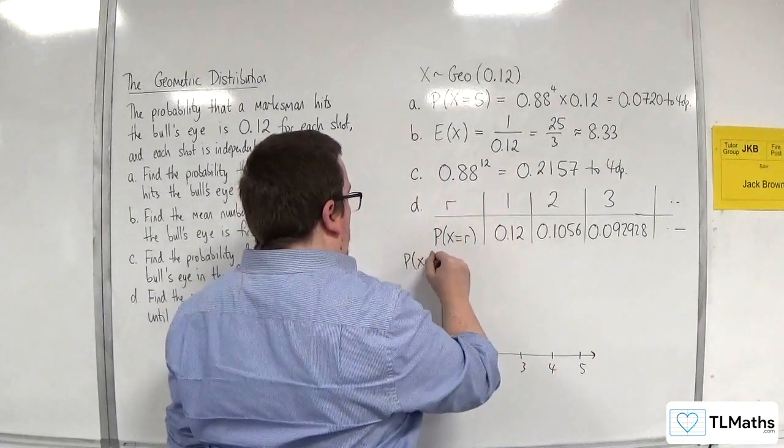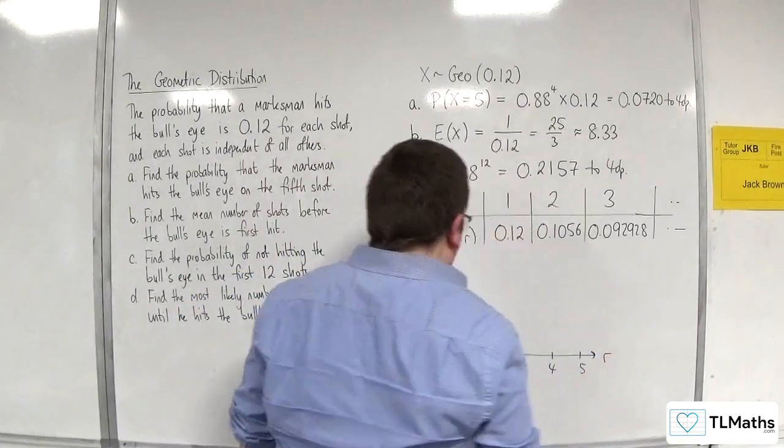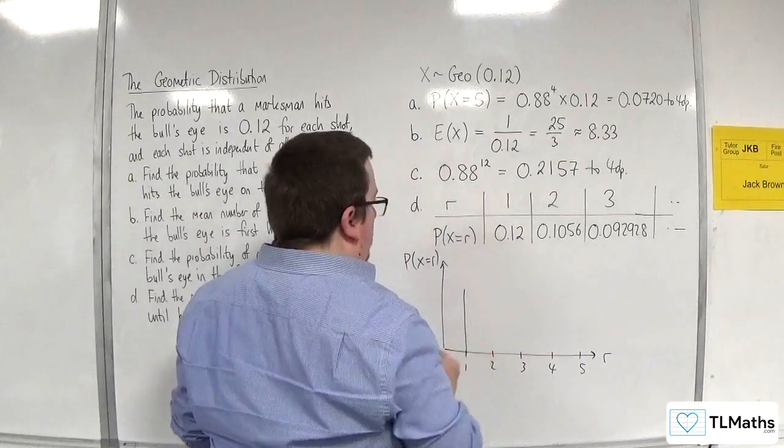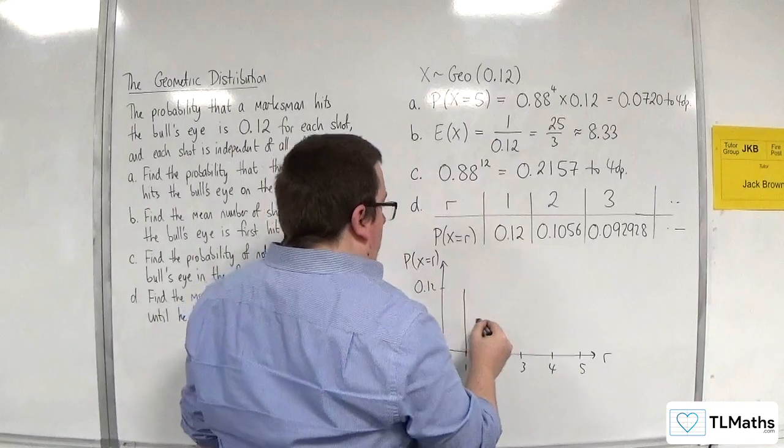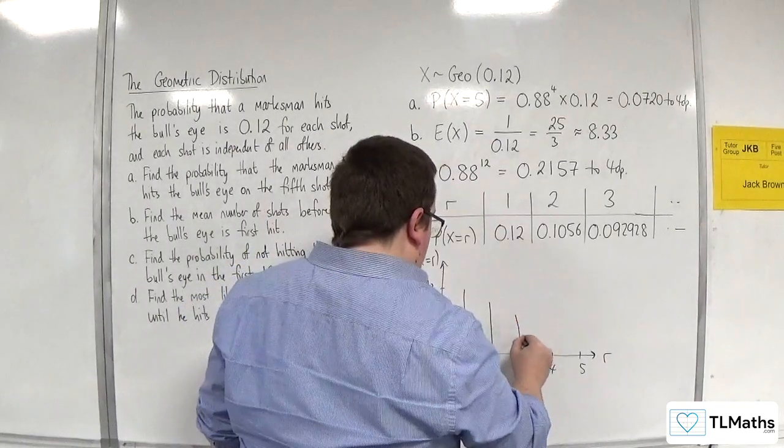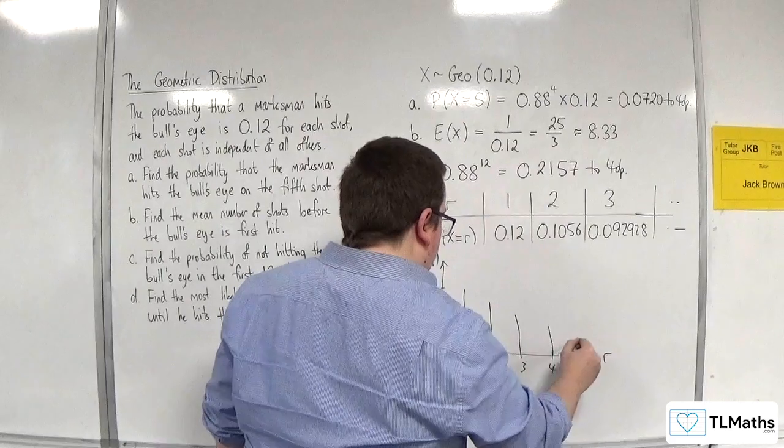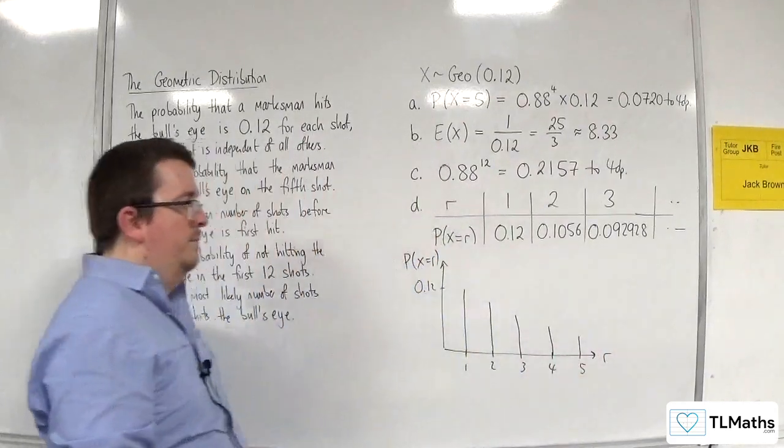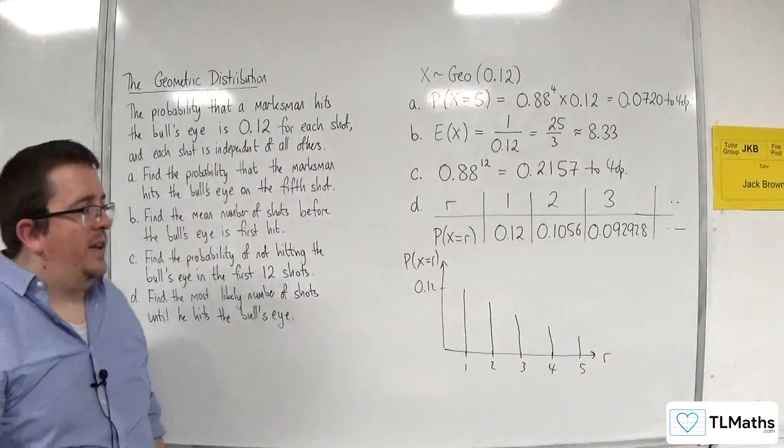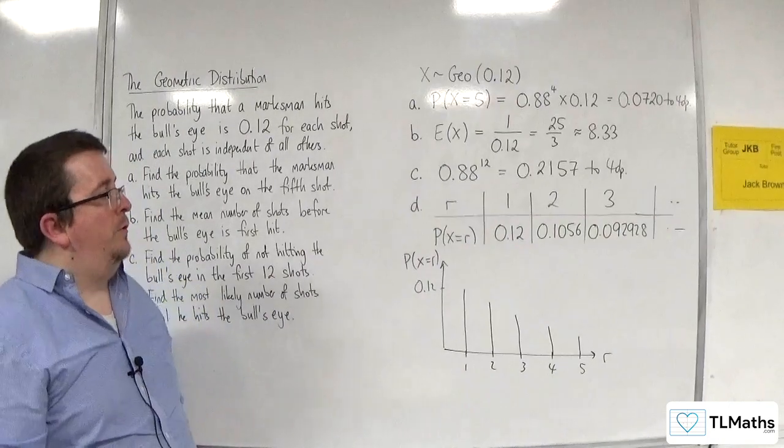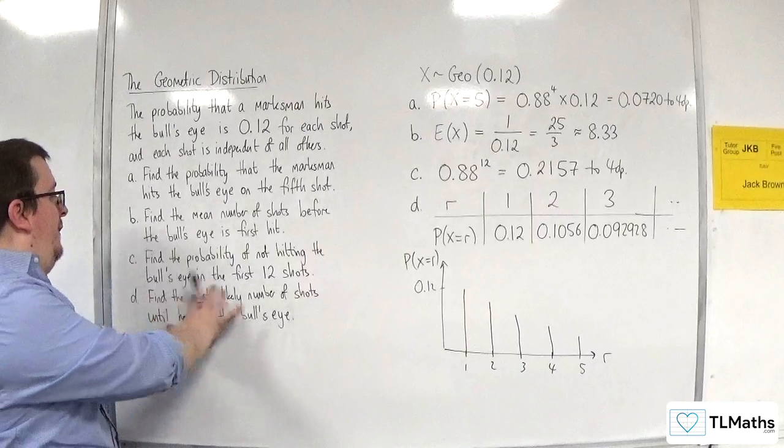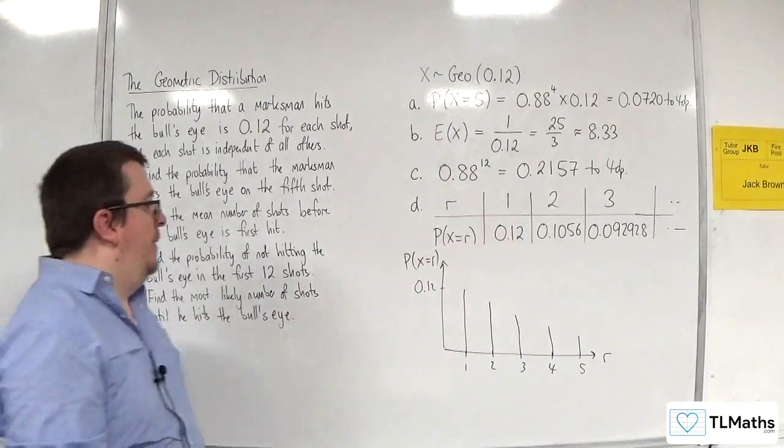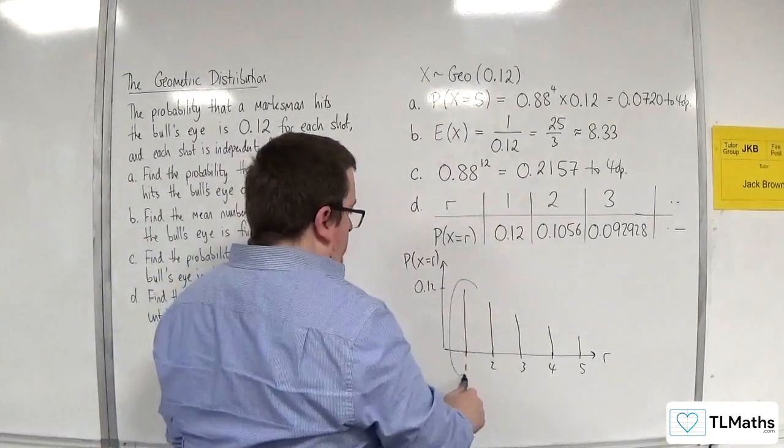So, it starts out at 0.12. And then, it's going to keep on decreasing. So, it's going to get closer and closer and closer to 0. Each time you multiply by 0.88. So, the most likely number of shots until he hits the bullseye is 1.